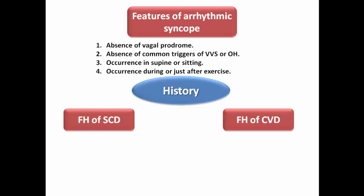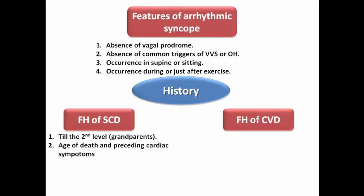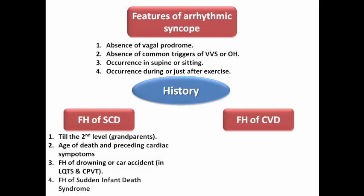When checking family history of sudden cardiac death, we need to check up to the second level of family like grandparents, noting the age of death and any preceding cardiac symptoms in the decedent. Family history of drowning or car accidents should be included, as in long QT syndrome or catecholaminergic polymorphic VT this may suggest a cardiac cause. Family history of sudden infant death syndrome should also be included.